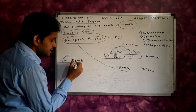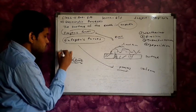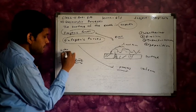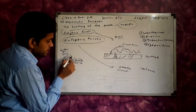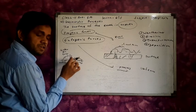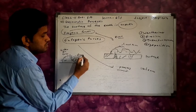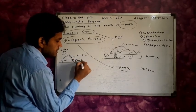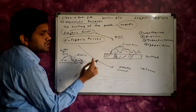After weathering, these particles are scattered. Then aerogenic factors like water, air, and glacier work with these scattered particles. The process of erosion involves cutting. Then these particles move from one place to another place, and this process is known as transportation — process number three.